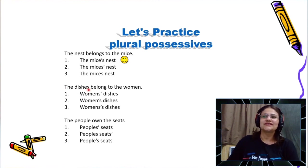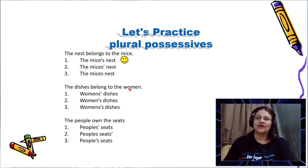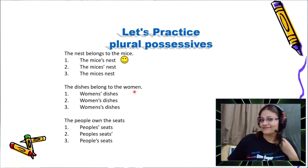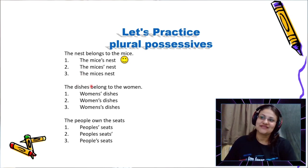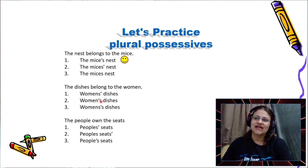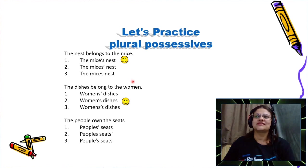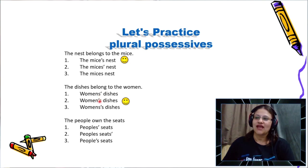The dishes belong to the woman. I have these dishes, which is a plural noun, but woman is a singular noun. So woman possesses the dishes. I write: woman's dishes, with apostrophe and an S. Number two is the correct answer because woman is a singular noun.